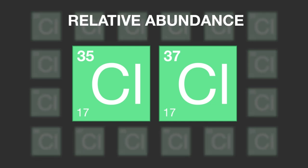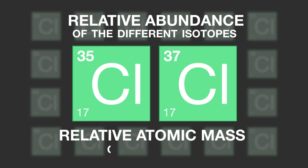The relative abundance of the different isotopes, in other words how common they are, is always taken into consideration when calculating the relative atomic mass of an element.